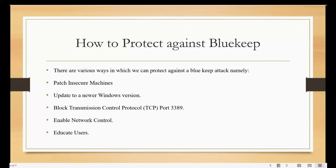The next protection method is enabling network level authentication (NLA). Organizations need to enable NLA, which gives them control over the users who can connect to their systems and prevents unauthorized access to their data and resources. This also helps block unauthorized users looking to exploit the BlueKeep vulnerability to attack the organization.